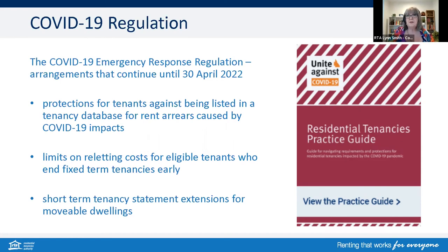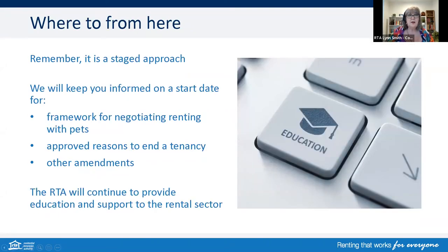Most of the COVID-19 regulations implemented during 2020 and amended in 2021 have been removed, particularly for the domestic and family violence provisions which were repealed. However, some amendments are continuing until 30 April 2022: protections for tenants against being listed on the tenants database because of rent arrears caused by COVID-19 impacts, limits on re-letting costs for people eligible from that regard, ending their fixed tenancies early, and also short tenancy statements extensions. This is a staged approach — not everything's starting straight away, and we are committed to providing education and support to the rental sector once we're aware of more information, sharing that with our key stakeholders and customers.